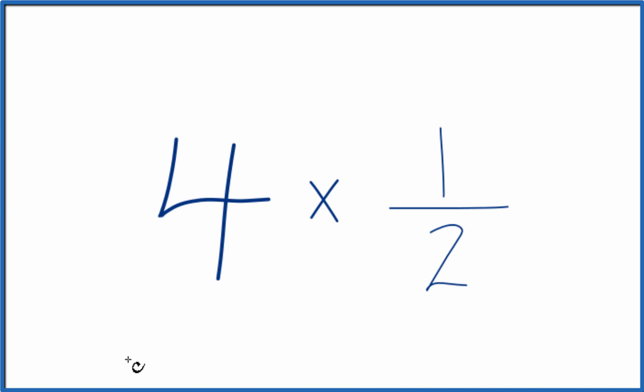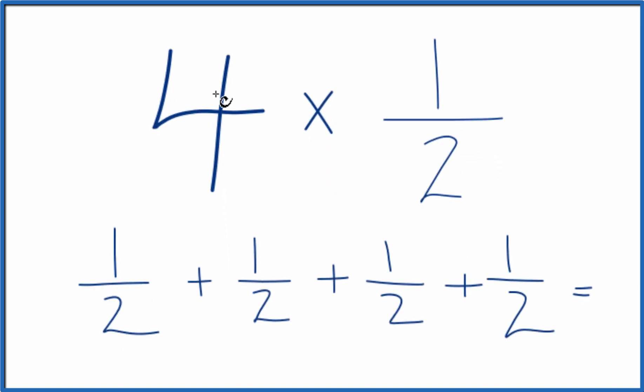Just add 1 half together four times, like this. So we have four 1 halves. One, two, three, four.